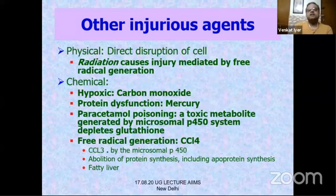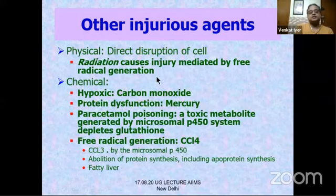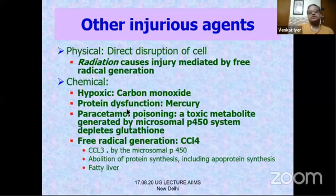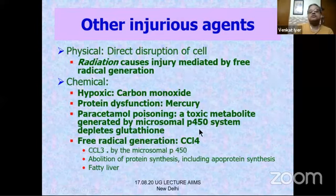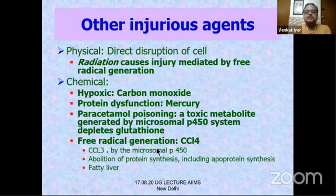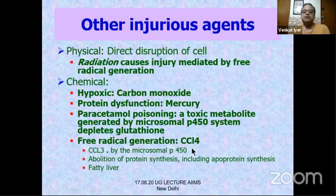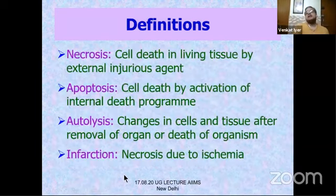Other injurious agents: physical agents disrupt the cell directly. Radiation causes injury mediated by free radicals and direct DNA damage. Carbon monoxide causes chemical hypoxia. Mercury poisons all SH groups of proteins, causing protein dysfunction leading to ATP damage. Paracetamol poisoning produces a toxic metabolite from microsomal P450 that depletes glutathione, reducing the ability to stop free radical damage. CCl₄ causes free radical generation via microsomal P450, damaging the liver — stopping apoprotein synthesis and causing fatty liver.